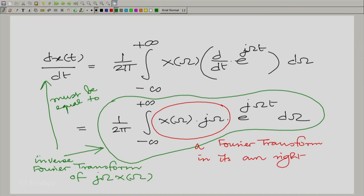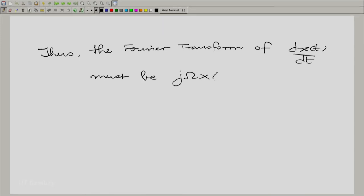So, let us write that down. We made a very simple conclusion by a very simple line of reasoning. So, thus the Fourier transform of dx(t)/dt must be jΩ times X(Ω) as we know. So, we have answered the question: dx(t)/dt has the Fourier transform jΩ X(Ω).